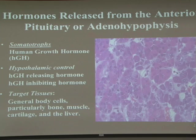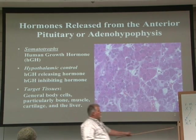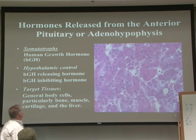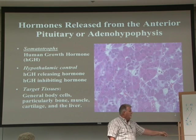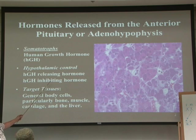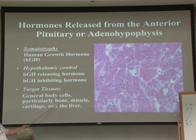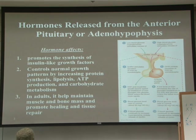We're going to continue with anterior pituitary hormones, looking at what each hormone is, what its target tissue is, and what effect it has on that tissue. Starting with somatotropes: these are cells of the anterior pituitary that produce human growth hormone. Human growth hormone is controlled by hypothalamic control — GHRH or GHIH. The target tissue for human growth hormone is general body cells, particularly bone, muscle, cartilage, and the liver. It targets cells to produce an internal messenger.